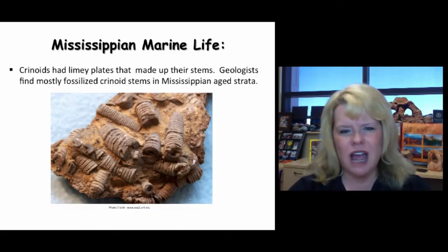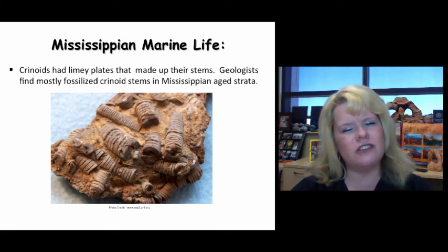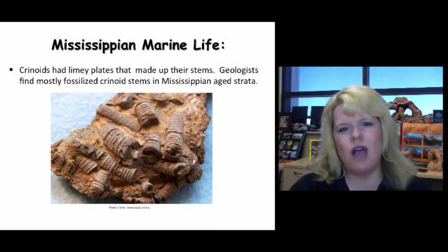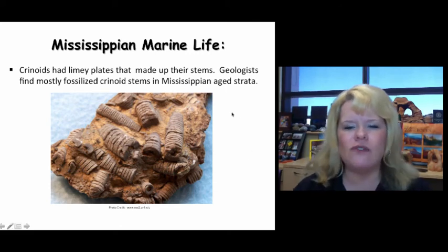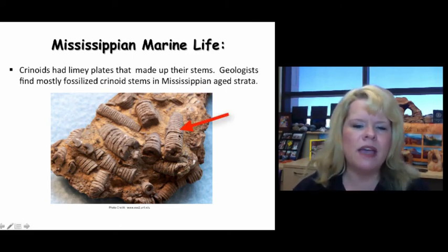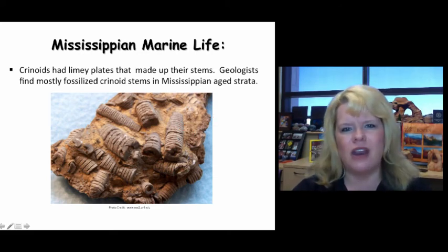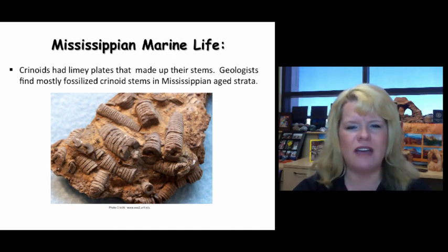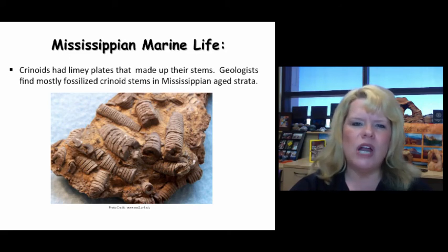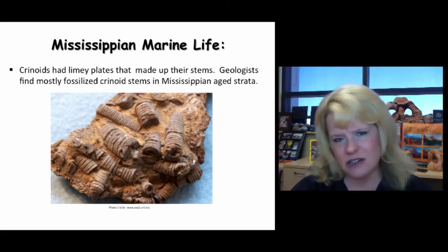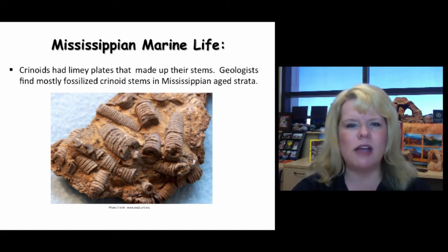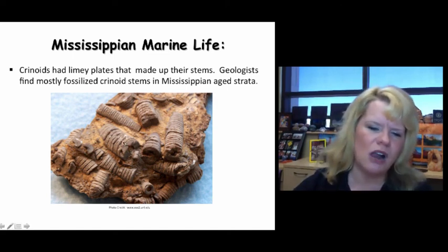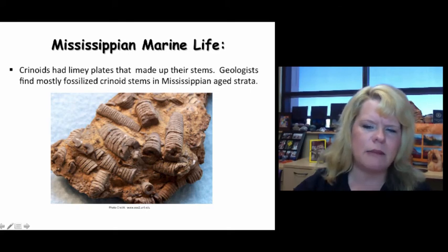Crinoids have very limey plates that make up their stems, and what geologists mainly find in the rock record are these plates — they usually don't find the flowers to go with them. They may look like non-coiling cephalopods, but the difference is crinoids have distinctive columns that make up their stems, whereas in a cephalopod they're going to have chambers. You can distinctively tell the difference between the two by looking at the columns. You can see the little individual columns right here — these are the limey plates that make them up.